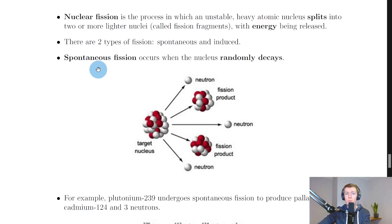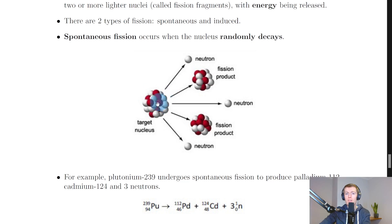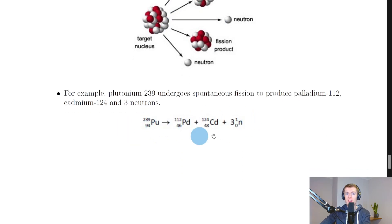So it says that spontaneous fission occurs when the nucleus randomly decays. So here we have a nucleus which might undergo a random decay to split into two fission products and some neutrons. So we would call this the parent nucleus and these two the daughter nuclei, and an example would be shown by this reaction here.